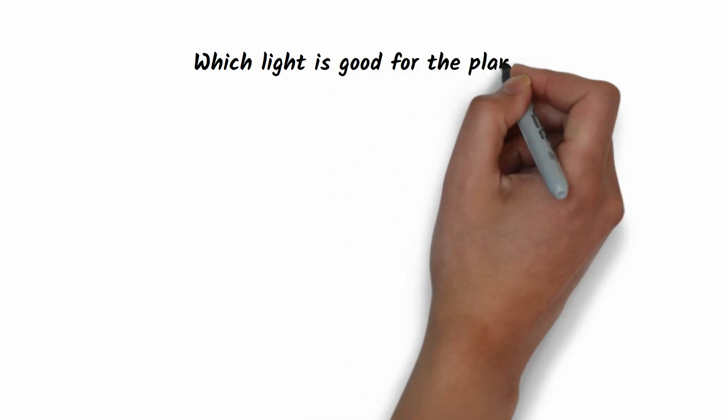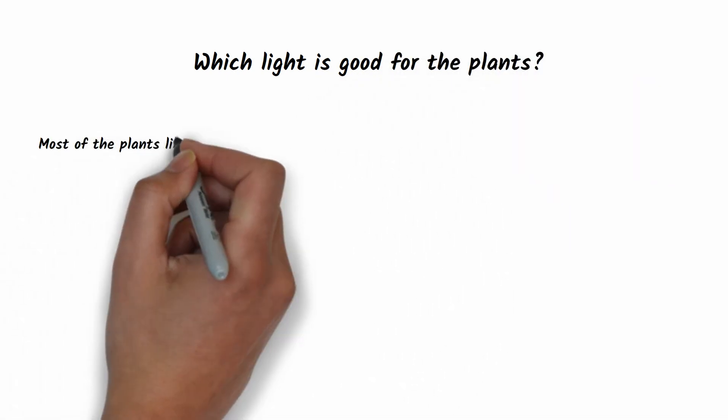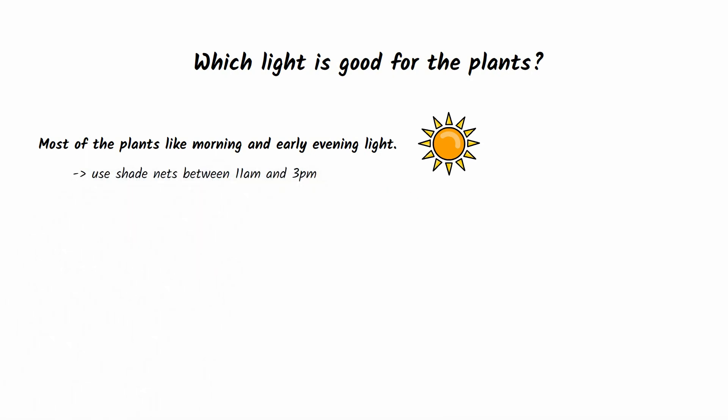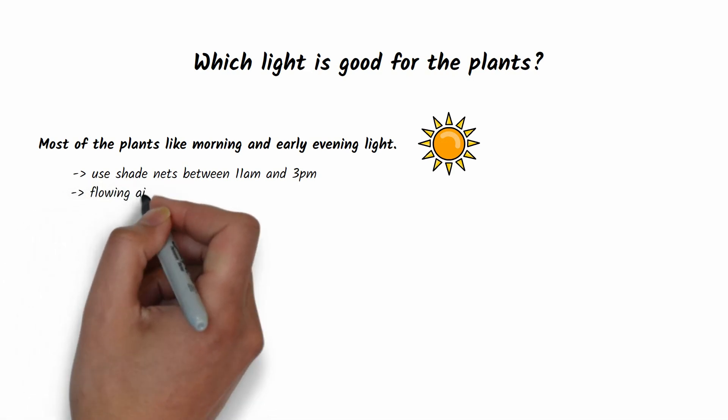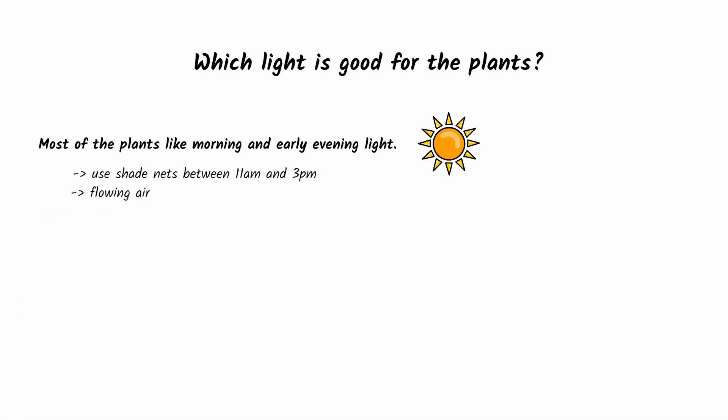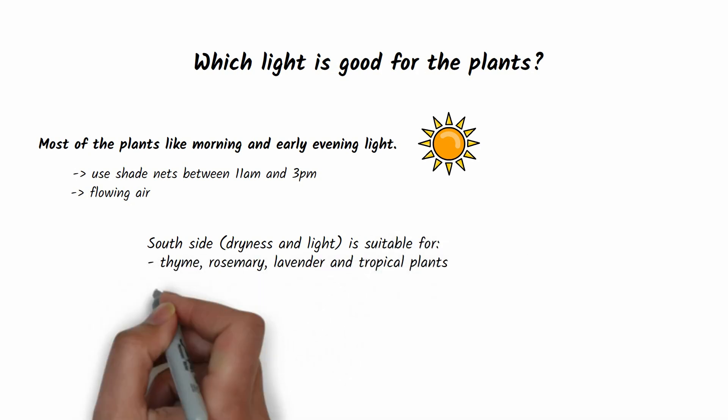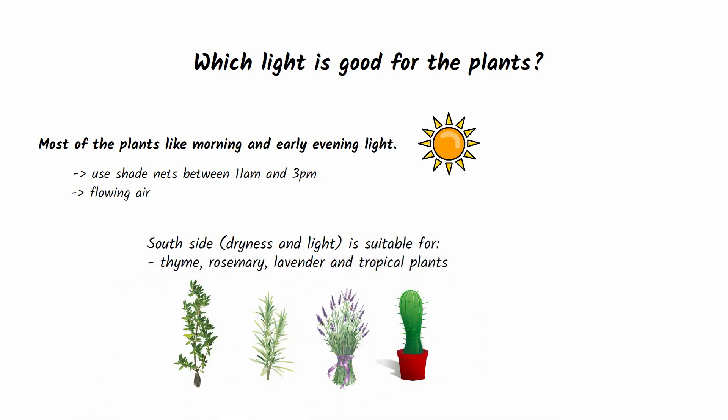What about the light? Plants enjoy morning and early evening light. If your plants are exposed to the sun directly between 11 a.m. and 3 p.m., use shade nets. However, make sure that there is always airflow around the plants. Thyme, rosemary, lavender, and tropical plants that like dryness and light prosper on the south side of the house.